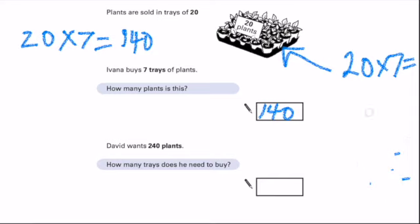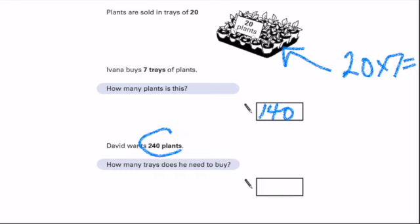Let's take a look at the bottom word problem. David wants 240 plants. How many trays does he need to buy? So he wants 240. There are 20 in a tray. So how many does he need to buy? Press pause while you work that out.